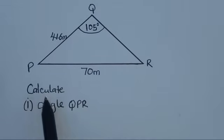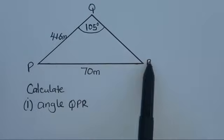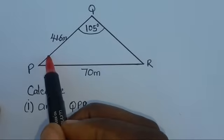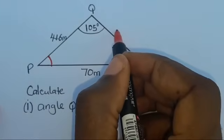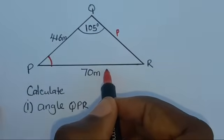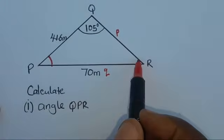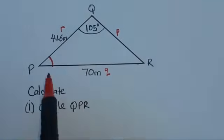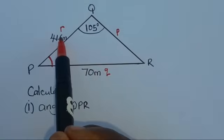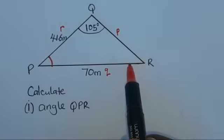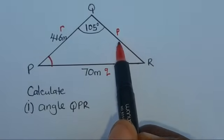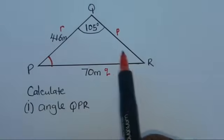Coming back to our question: calculate angle QPR. That is the angle we want to find. We indicate the missing side as small letter p, because the vertex is capital P. We label small letter q for the side opposite angle Q, and small letter r for the side opposite angle R. We've been given an angle and its opposite side — a complete path — and another side and its opposite angle, giving us a half path to find the missing angle.